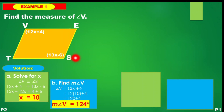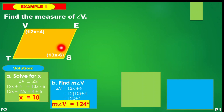If you also want to find the measure of angle S, simply substitute x: 13 times 10 minus 6. You will still get the same value, which is 124 degrees.